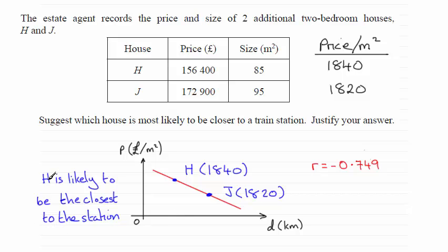So the reason for this, that H is likely to be closest to the station, is because it has got the smallest value for D—smallest D.